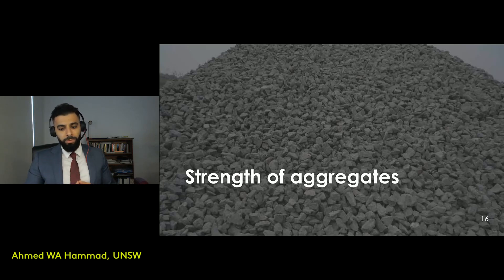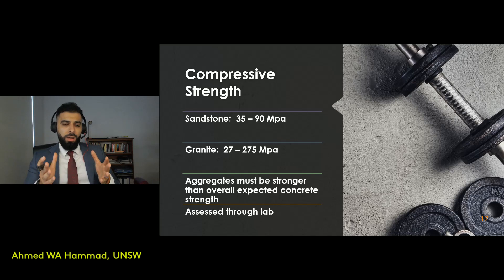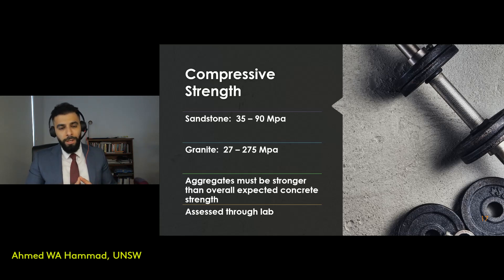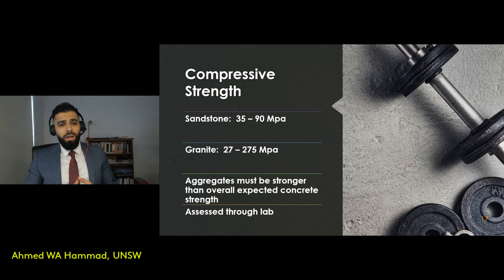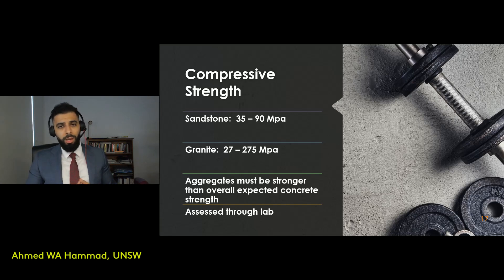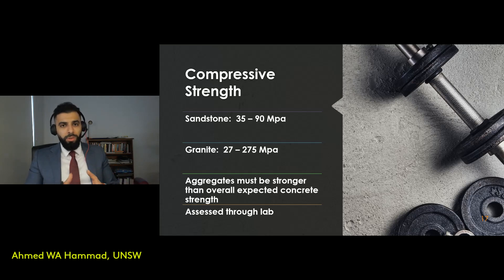Aggregate strength is important because a major reason for having aggregates in your concrete mix is to resist loads on your structure. Strength is measured in megapascals, the same units used for concrete. For example, sandstone is between 35 to 90 MPa, while granite ranges from 27 to 275 MPa. Depending on the aggregates used in a concrete mix, you will impact the strength of the overall concrete produced, and these strengths are all assessed in a lab setting.